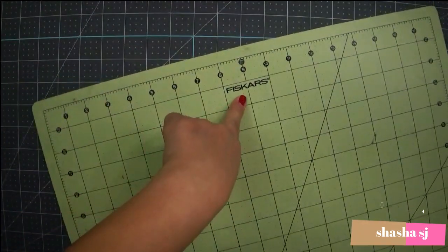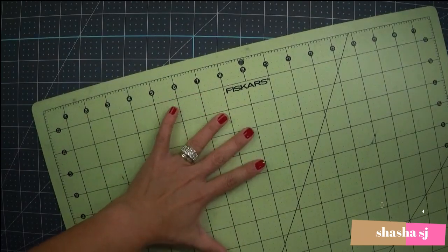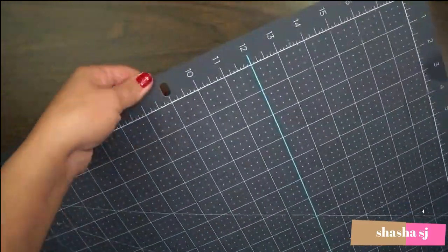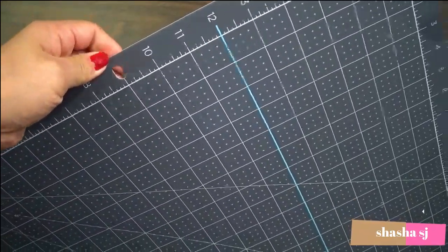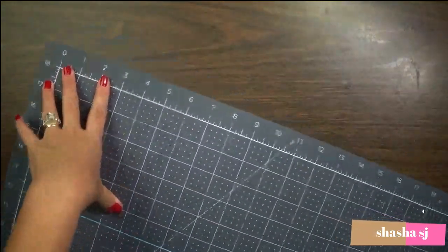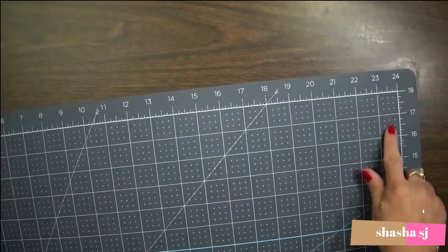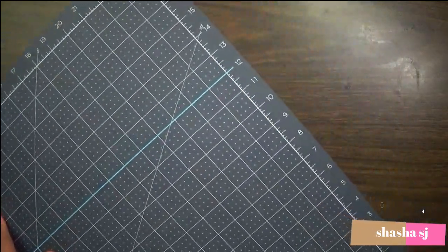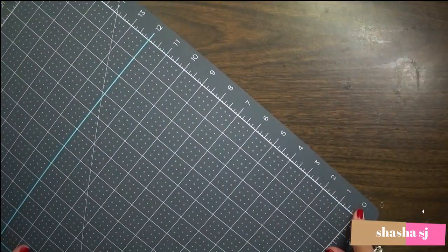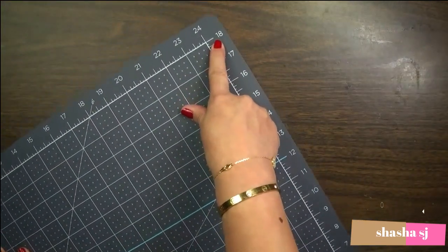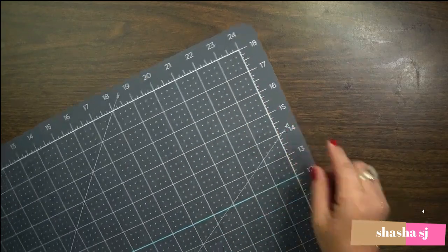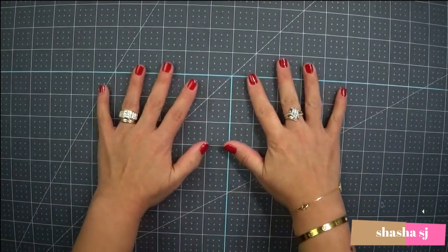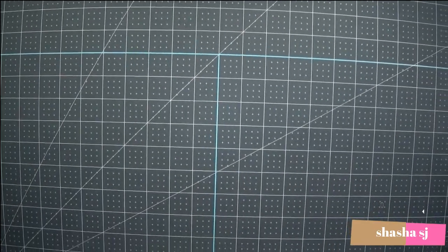Thank you Fiskars for being so nice to me and being with me for almost 10 years. As you can see, there's a hole in it, I think for when you hang it up. The measurements are 0 to 24 and the bottom is 0 to 18. So it's really nice, a self-healing mat, the same as my Fiskars.